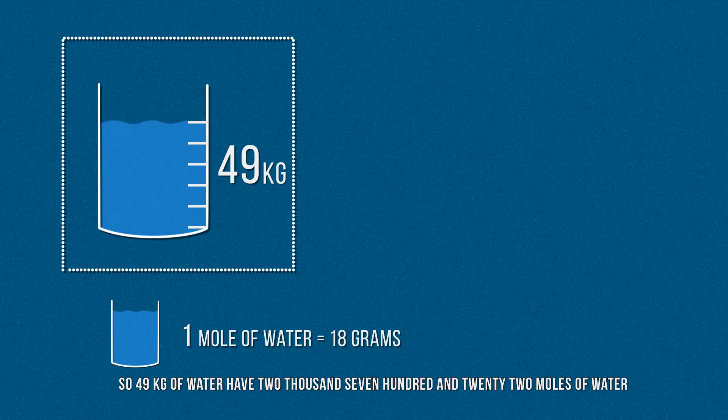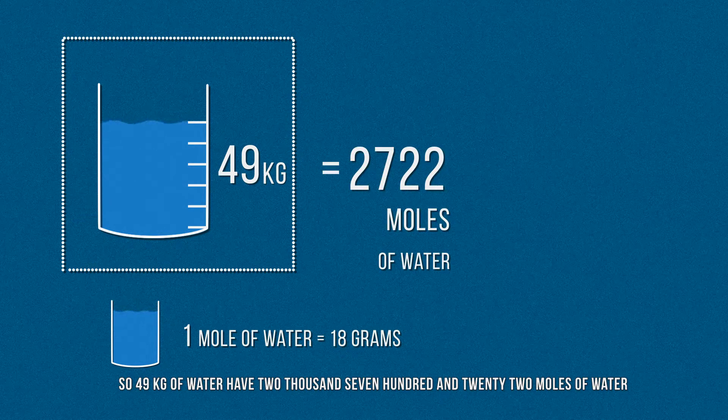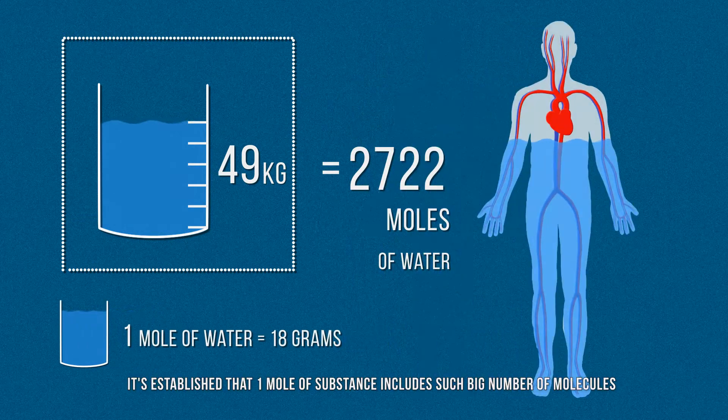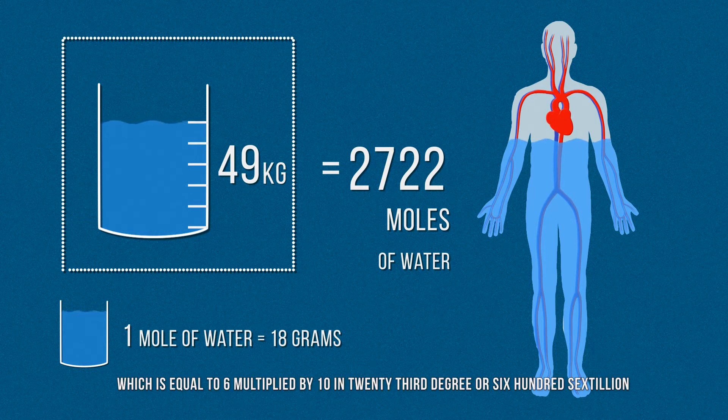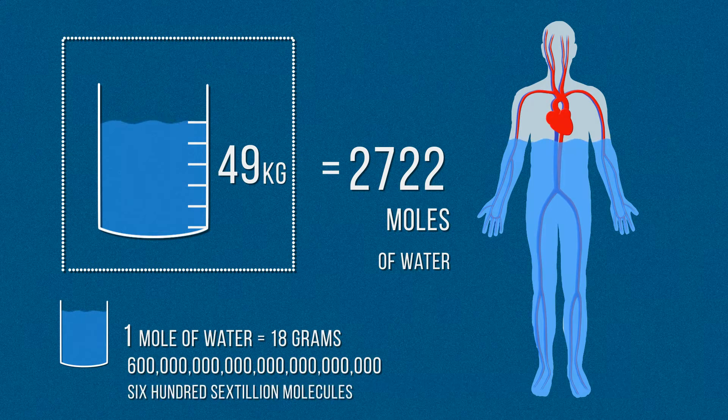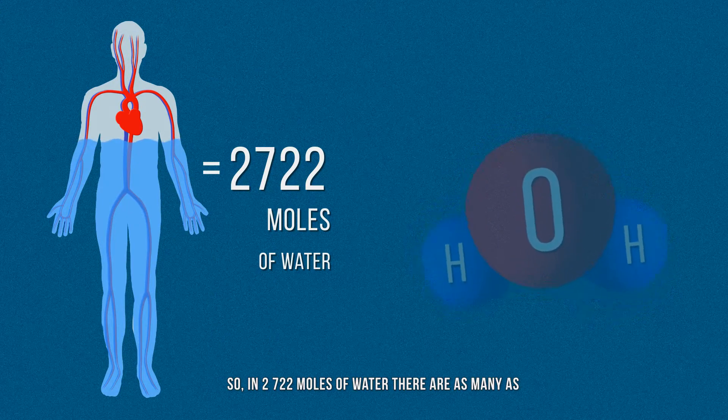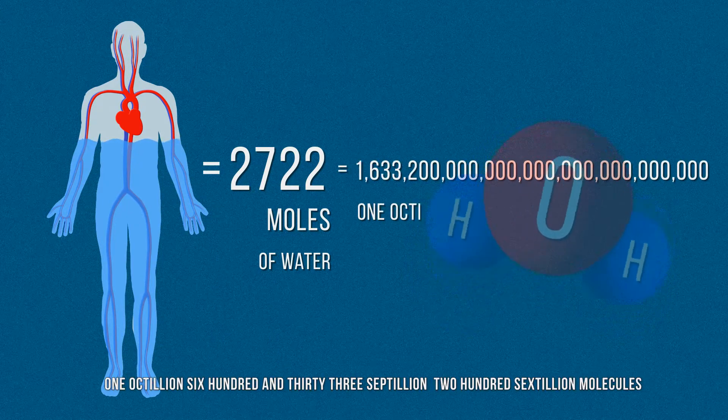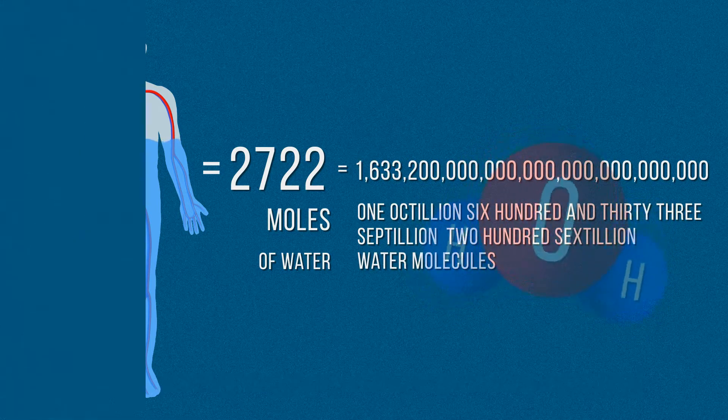So 49 kg of water have 2722 moles of water. It's established that one mole of substance includes such a big number of molecules, which is equal to 6 multiplied by 10 in 23rd degree, or 600 sextillion. So in 2722 moles of water there are as many as 1 octillion 633 septillion 200 sextillion molecules.